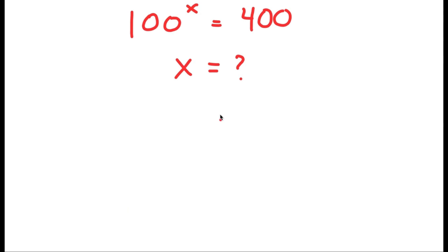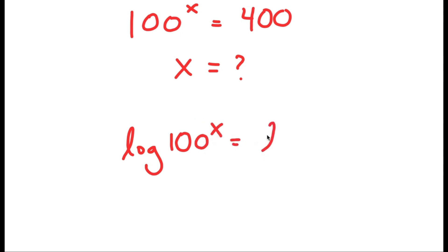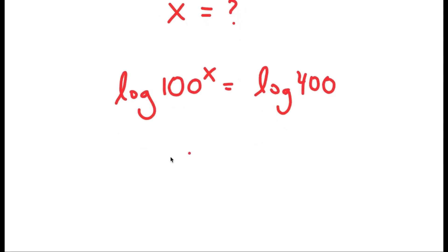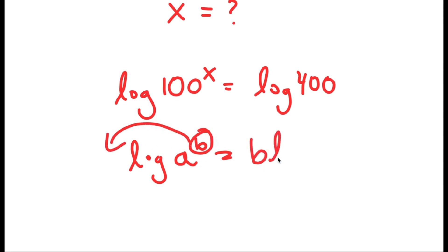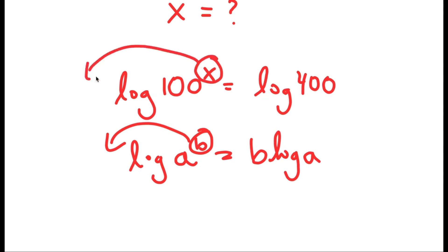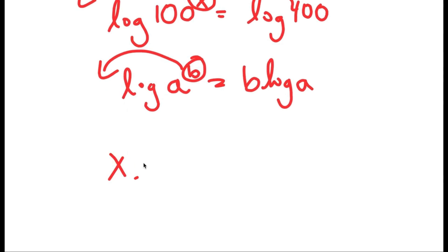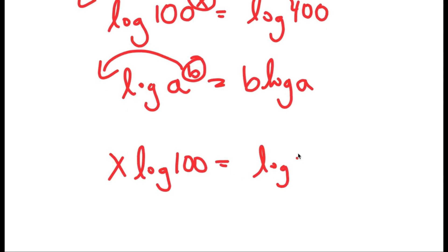To solve this, I'm going to be using logarithms. I'll take the log on both sides: log of 100 to the power of x is equal to log 400. If I have something in the form log a to the power of b, I move the exponent to the front to get b times log a. So in this case, I get x times log 100 is equal to log 400.